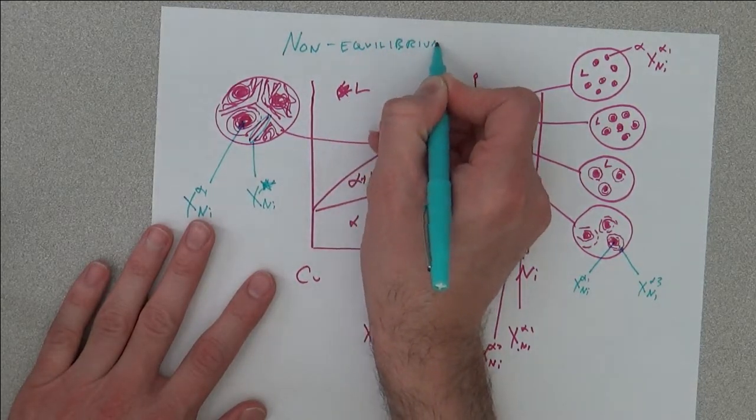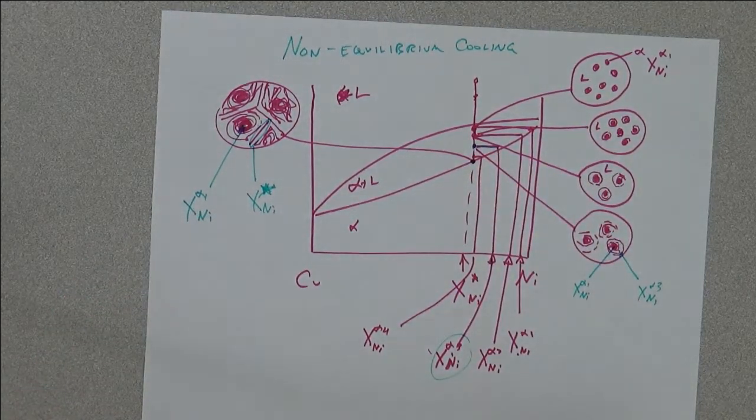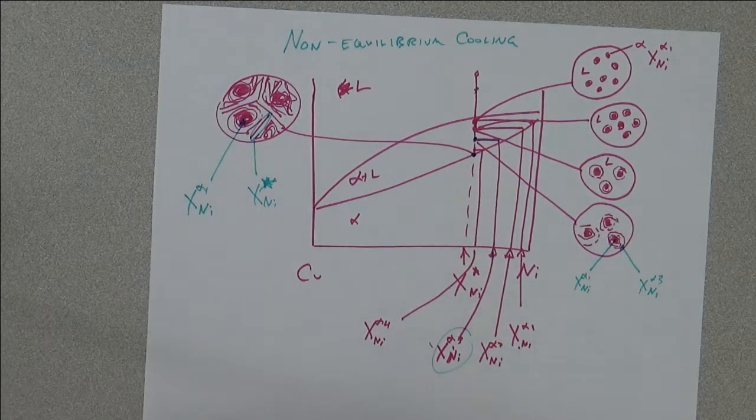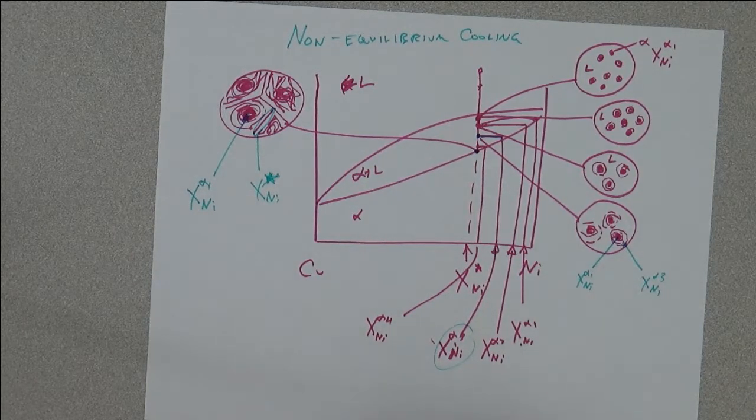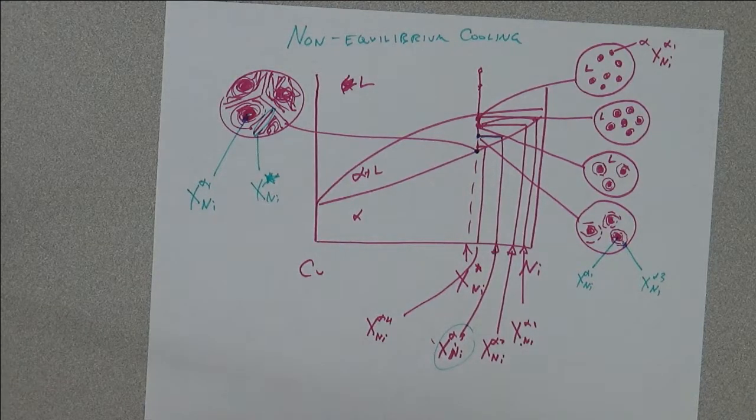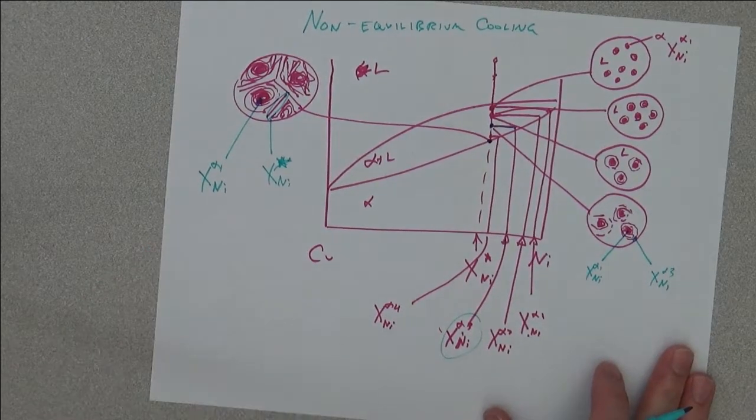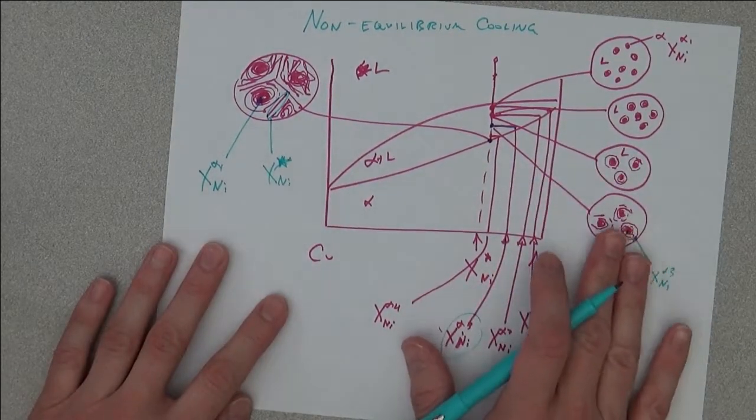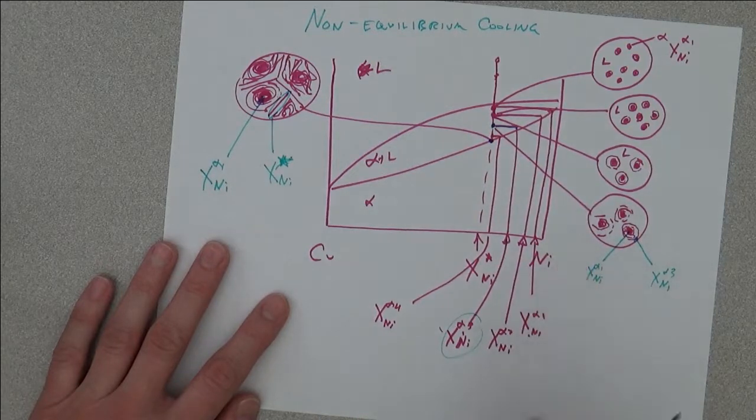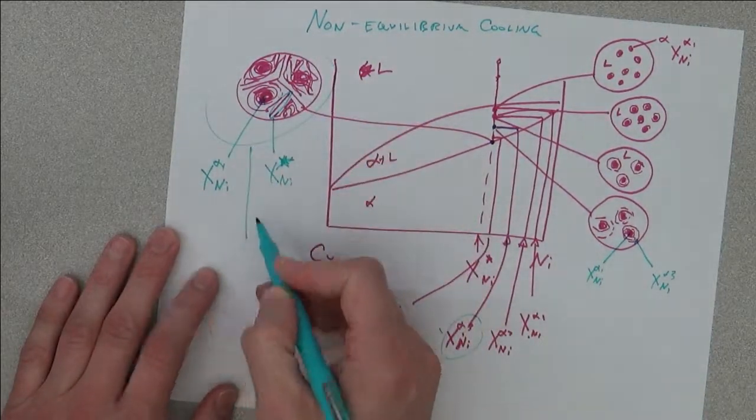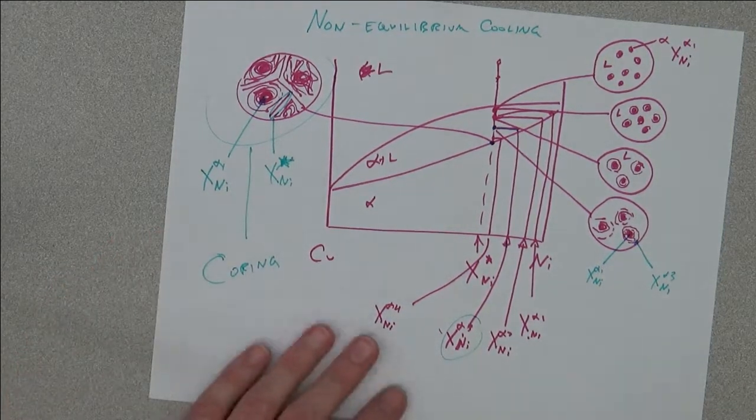So this is non-equilibrium cooling. It's kind of the first simplest way to think of it. It's a little bit more complicated when we start getting into multiple solid phases, because we have to talk about diffusion into these phases and under-cooling for transitions. But this simple example is the best first example of how non-equilibrium knowledge can come from an equilibrium phase diagram. This whole thing is called coring.